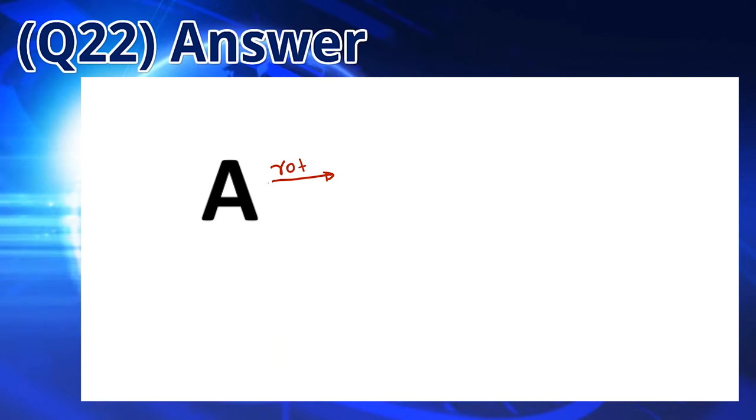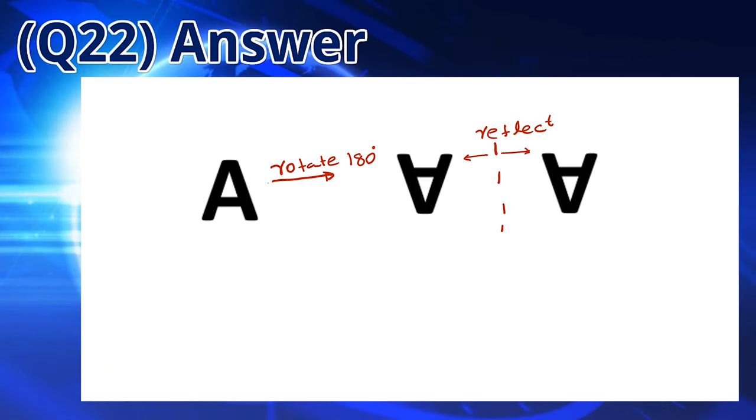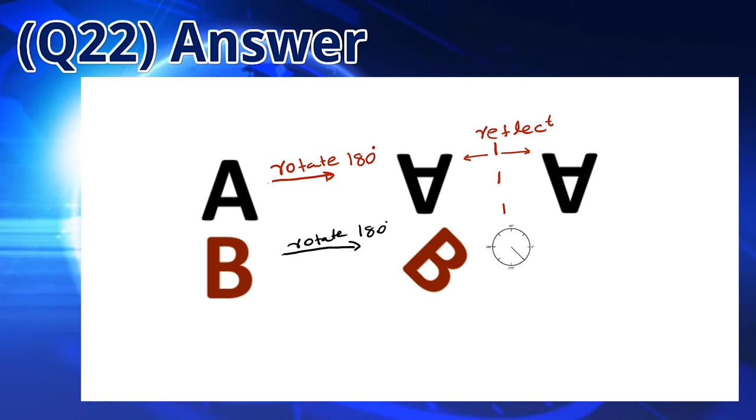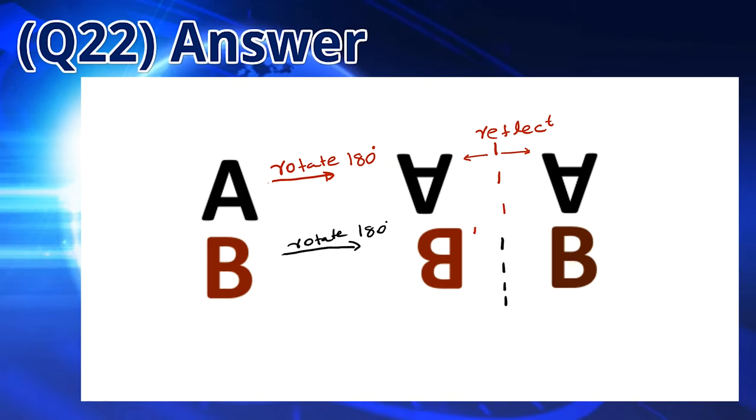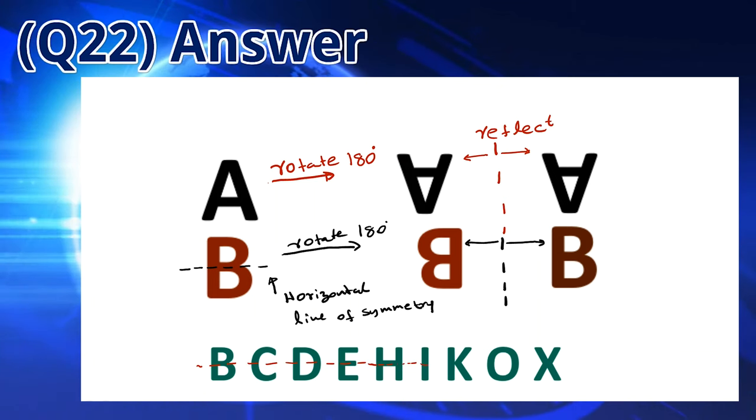Take A as an example. If you rotate it 180 degrees and reflect it, it will not look the same. Let's take B. If you rotate it 180 degrees and reflect it, it looks the same. We notice that all the letters that are rotated 180 degrees and are reflected and look the same in its previous form, they all have a horizontal line of symmetry. There are a total of 9 letters that have this property. So the answer is E.